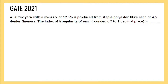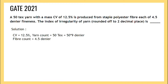The fiber fineness is 4.5 denier. The index of irregularity of the yarn, rounded off to two decimal places, is asked. Given: CV is 12.5 percent, yarn count is 50 tex (that is 50 × 9 denier), and fiber count is 4.5 denier. We have to find the index of irregularity, which is actual CV upon limit CV.